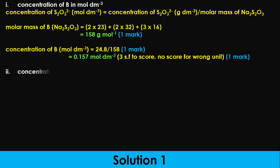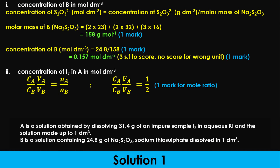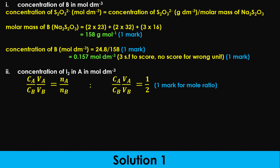To calculate the concentration of iodine in A in moles per dm³, we use the mole ratio formula connecting concentrations and volumes of iodine and sodium thiosulfate with their number of moles: CₐVₐ over CᵦVᵦ equals Nₐ over Nᵦ, which equals 1 over 2. We use this formula because the sample of iodine is impure, so we cannot use the given concentration in grams per dm³ to calculate the molar concentration. Whenever you are given an impure substance, never use its impure mass concentration to calculate molar concentration.